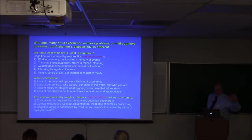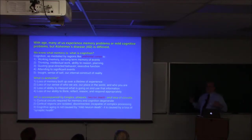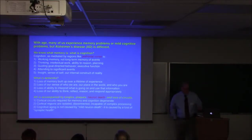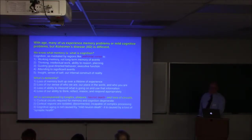The cortical circuits that are required for memory and cognition deteriorate. Cortical regions end up isolated and disconnected, and they can no longer function in a complex set of circuits. But cognitive aging is not caused by that, as I just said. It's caused by what we would call the loss of synaptic health, the health of your synapses. And I'll provide two examples of that.